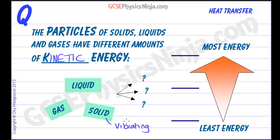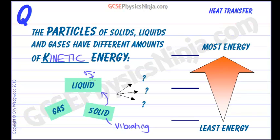If you add heat energy to these particles, they vibrate with bigger and bigger wobbles, and eventually they will break the solid bonds which bind them in a fixed position and become a liquid. These particles are moving around each other, so they're not in a fixed position anymore, but they're still quite close together.